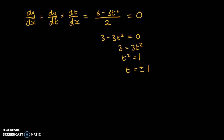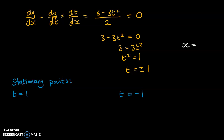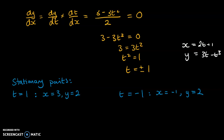So that means we have stationary points when t = 1 and when t = -1. I'm just going to rewrite what x and y were at the side here since they're off screen, just to remind us so that we can work them out for these stationary points. So we have the coordinates of the stationary points being (2, 3) and (2, -1), just by substituting in t = 1 and t = -1.